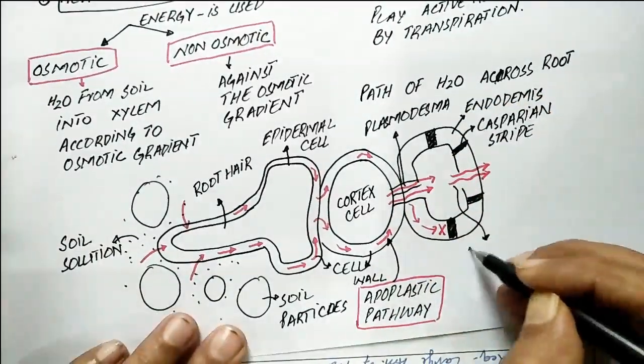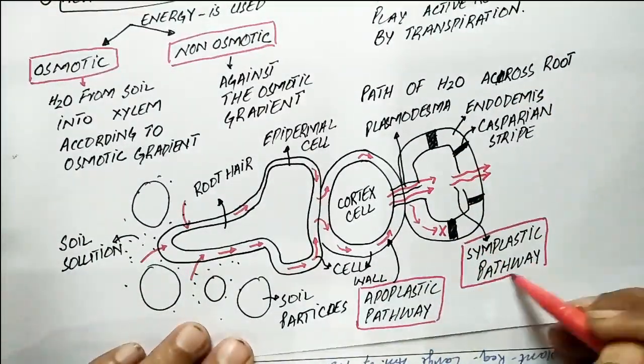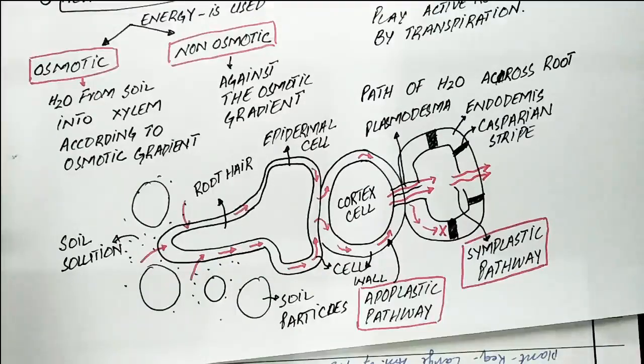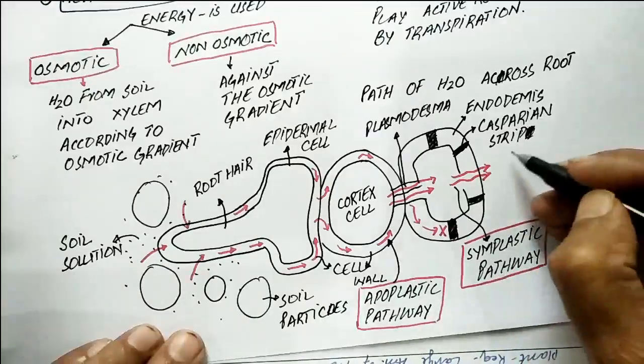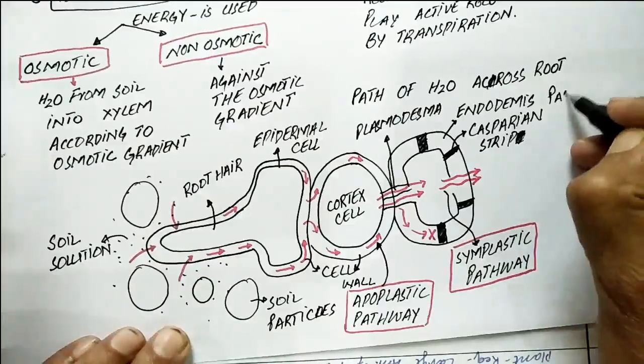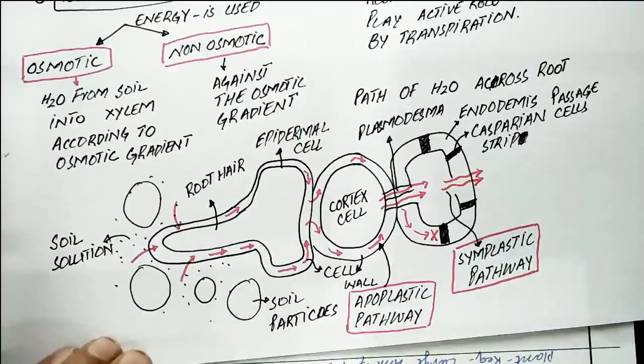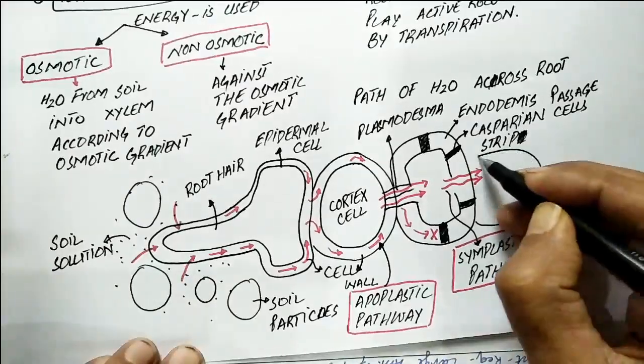Then it moves to the pericycle apoplastically, symplastically, or vacuolar pathway may be used. From the pericycle, water enters into the xylem vessel.